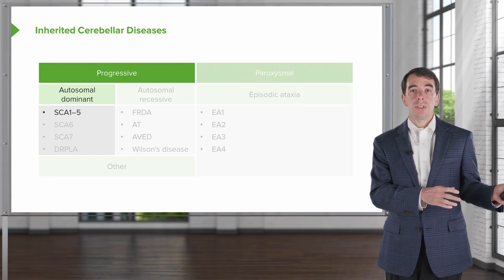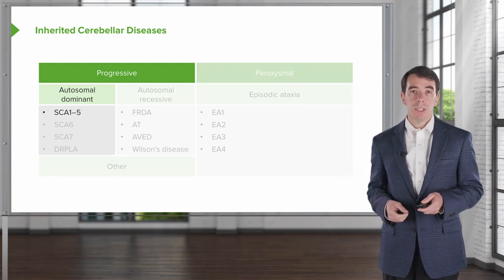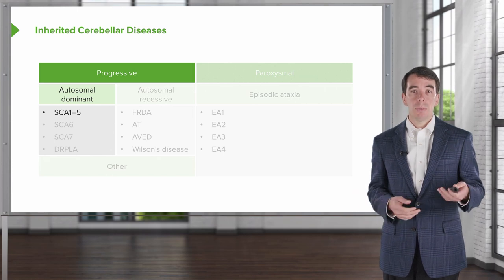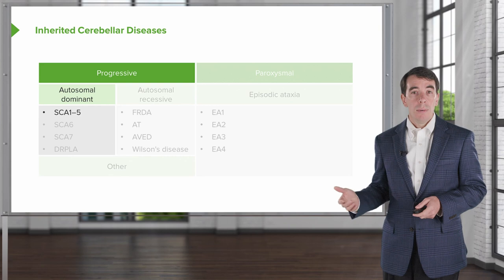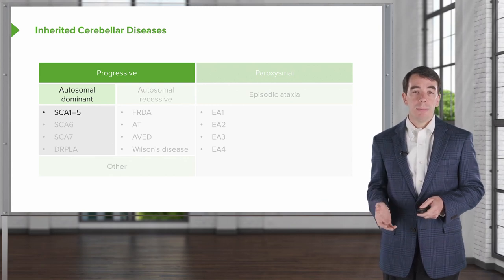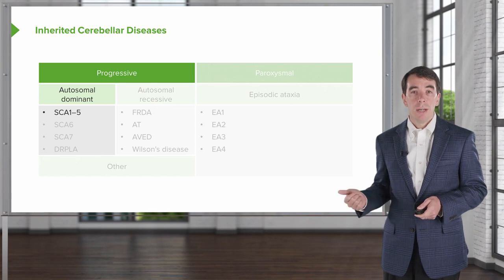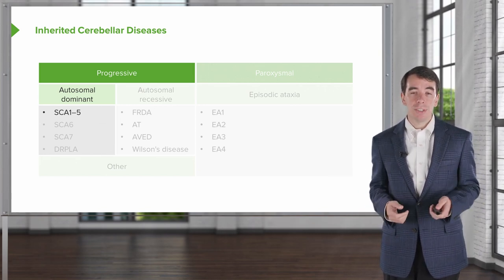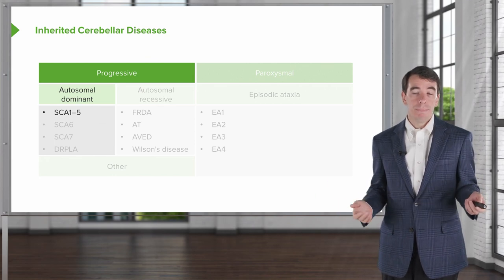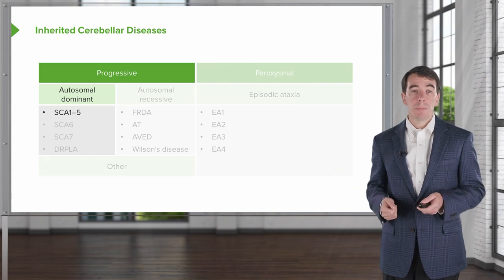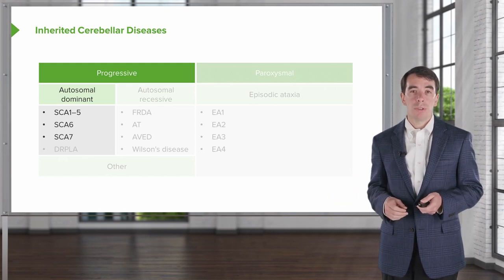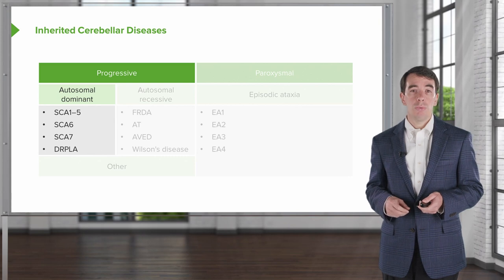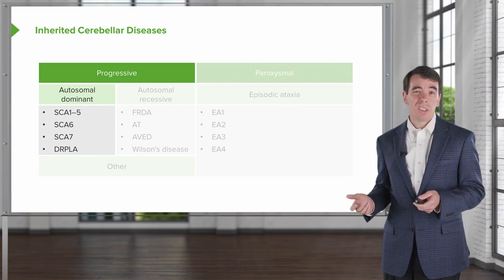Beyond acquired conditions, we can think about inherited cerebellar diseases, categorized as progressive or episodic. Progressive conditions just get worse over time. They can be inherited in autosomal dominant or autosomal recessive fashion. Most autosomal dominant progressive ataxia syndromes are the spinocerebellar ataxias, numbered SCA 1 through 5, 7, and up into the 30s, each presenting with progressive ataxia. There is also the rare condition dentato-rubro-pallido-luysian atrophy, or DRPLA.